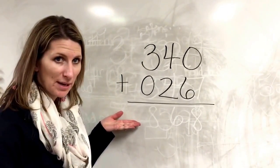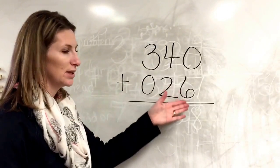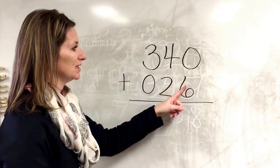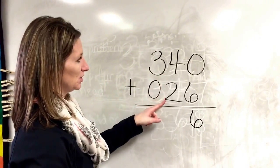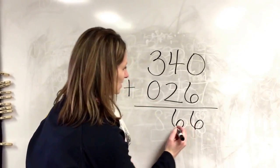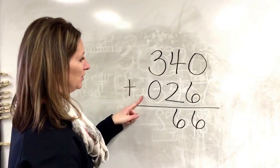Okay second grade, you should have this solved on your whiteboard. You started with the ones: zero plus six is six, four plus two is six, three plus zero is